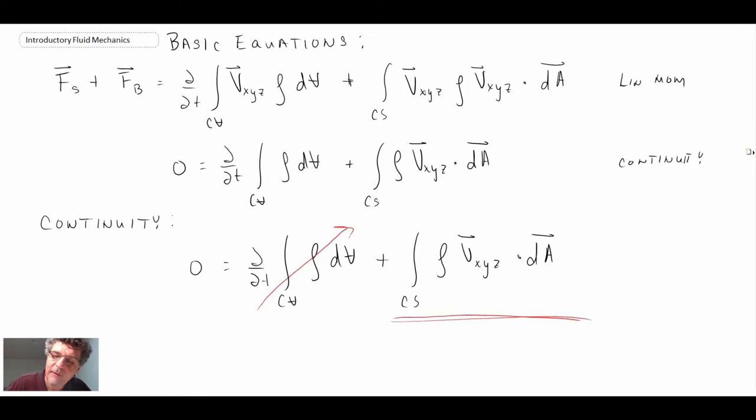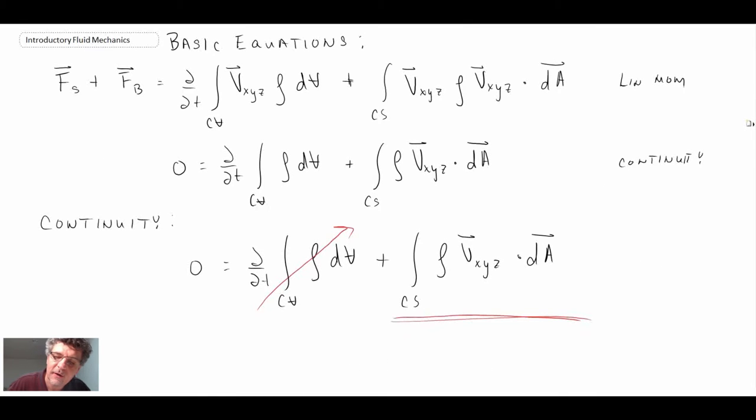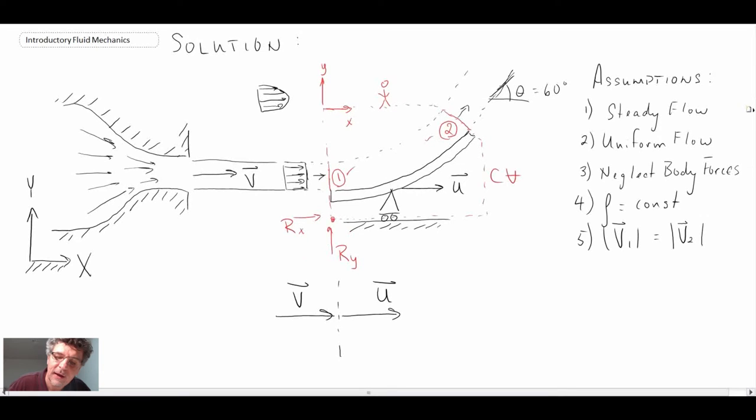We came up with a control volume that was moving, and what we did in the last segment, at the end, we ended with the continuity equation. We expressed it in this format here and left area one, area two undefined because we weren't sure how the area of the fluid crossing the control surface was changing. This being A1 here and this being A2 there.